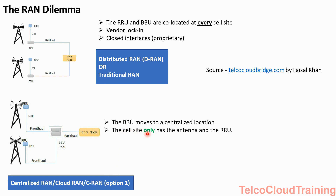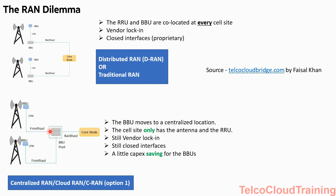The cell site now only has the antenna and the RRU. But still this is vendor lock-in — you still have to buy the RRU and the BBU from the same vendor because the interfaces are still closed and not open. However, we have achieved a little CAPEX saving for the BBUs: fewer BBUs are required to manage the same number of RRUs because we have pooled them, so the capacity can be utilized a little better.